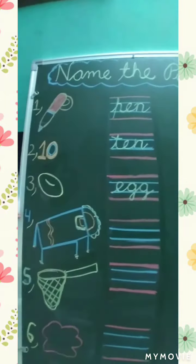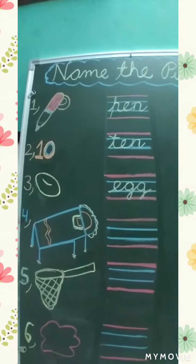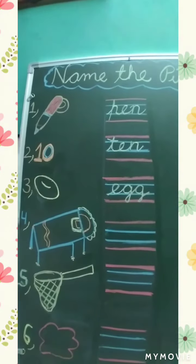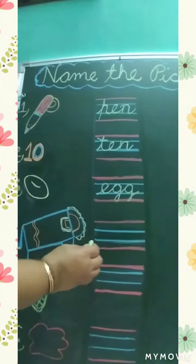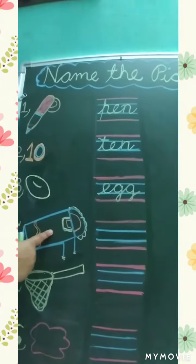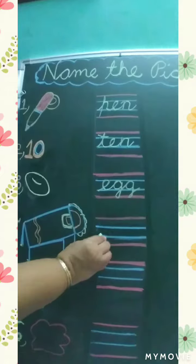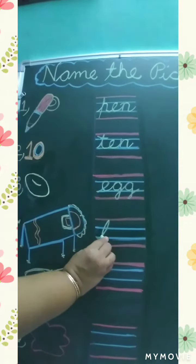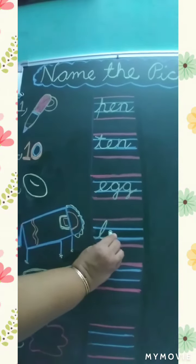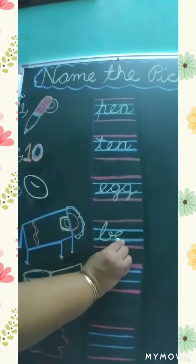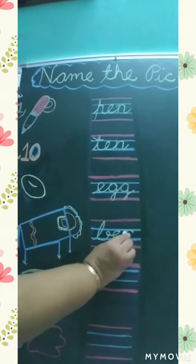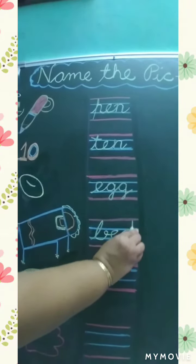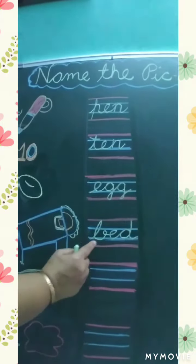And fourth picture is, this is picture of bed. Palang ko bed bolte hai. B, E, D, bed.